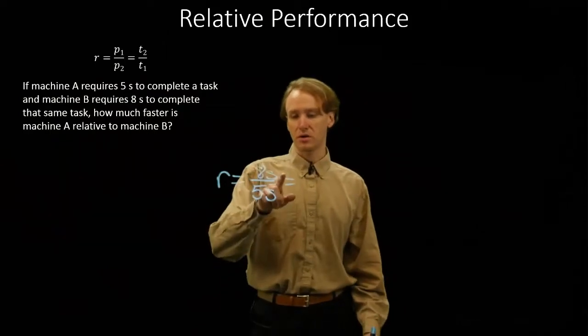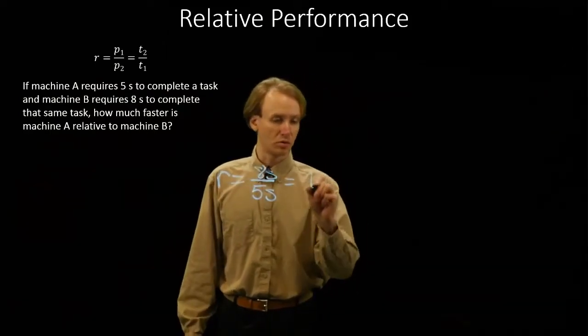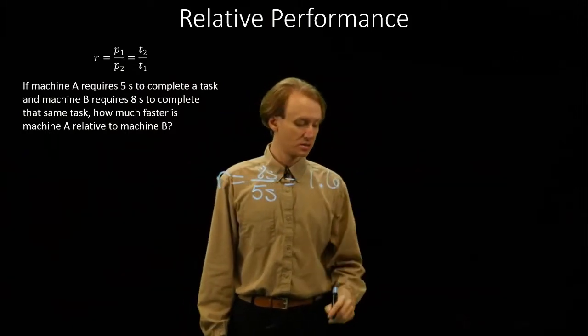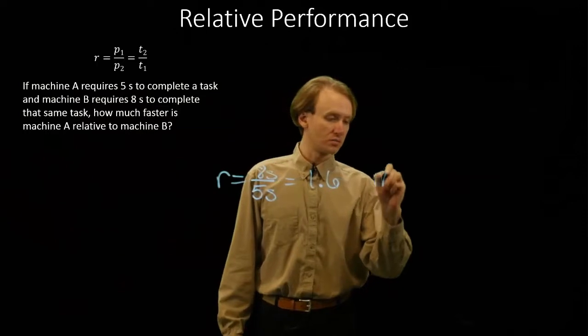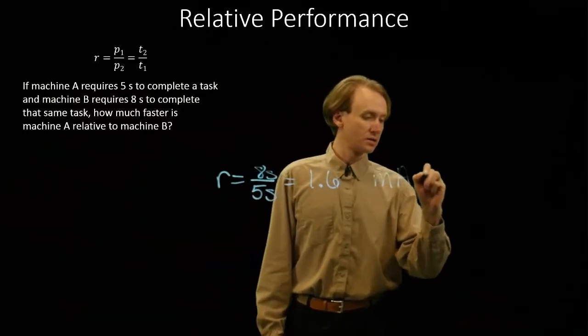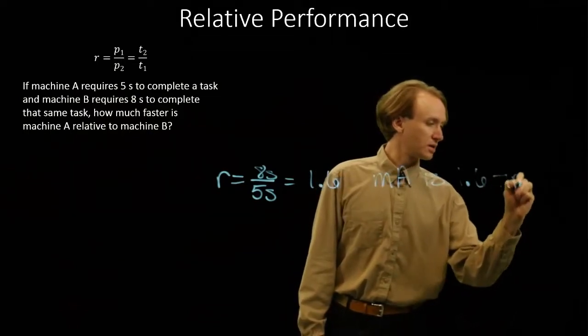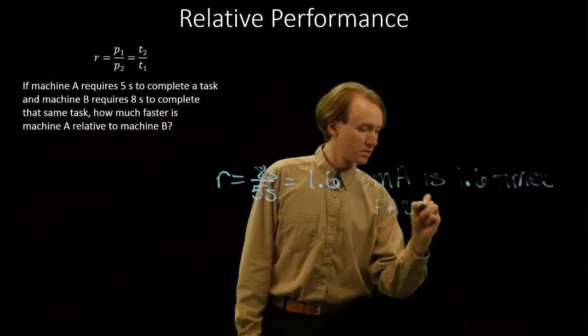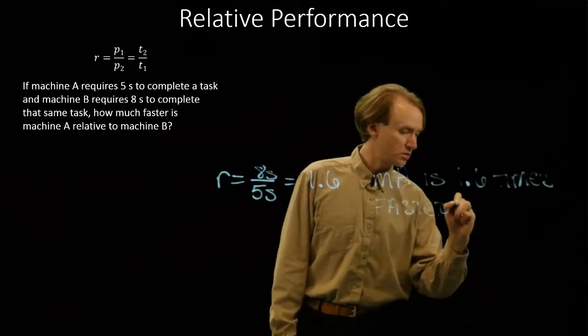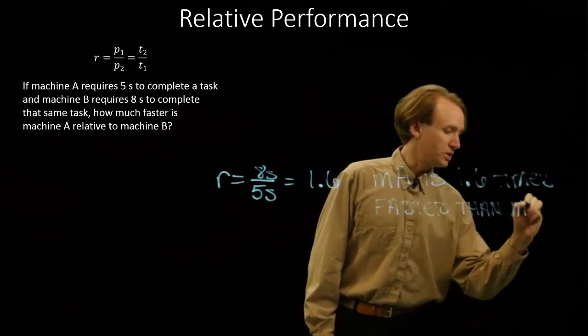So again, our seconds will cancel. We'll get eight divided by five, or 1.6, which tells us that machine A is 1.6 times faster than machine B.